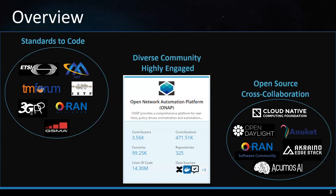Quick refresher about ONAP. ONAP is a comprehensive platform for orchestration, management, and automation of network and edge computing services for network operators, cloud providers, and enterprises. It enables real-time, policy-driven orchestration and automation of physical, virtual, and containerized network functions. ONAP enables rapid automation of new services and complete lifecycle management critical for 5G and next-generation networks. Over 200 developers from 30 organizations collaborate to deliver the ONAP release.